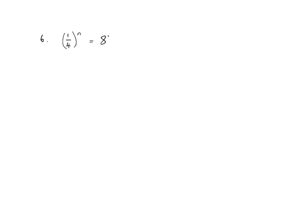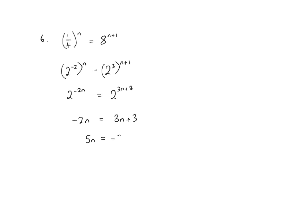For question 6, we have a quarter to the power n equals 8 to the power n plus 1. We rewrite as powers of 2: 2 to the power of negative 2 to the power n equals 2 to the power 3 to the power n plus 1. So 2 to the power negative 2n equals 2 to the power 3n plus 3. Therefore negative 2n equals 3n plus 3, giving 5n equals negative 3, so n equals negative 3 over 5.